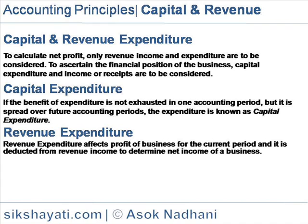Examples of Capital Expenditure — Acquisition of Asset Expenditure: Expenditure incurred to acquire fixed assets intended to be used in the business beyond the current financial year and not meant for resale. For instance, a plant bought during the current accounting period intended to be used over several years.